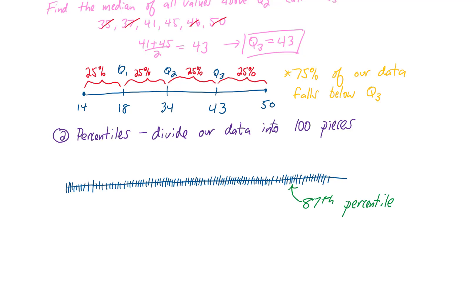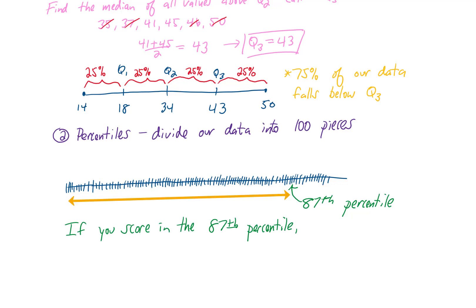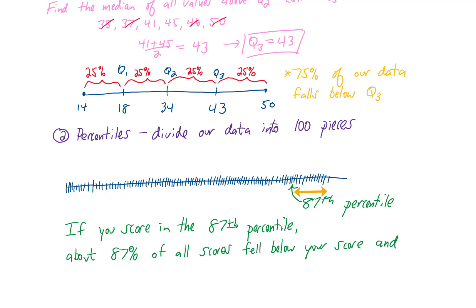Over here is the 87th percentile. You may have seen percentiles when taking standardized tests. If you scored in the 87th percentile, approximately 87% of all scores fell below your score, and approximately 13% of all scores fell above it. I think that's all you need to know about percentiles, and I hope that helps you out.